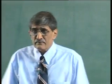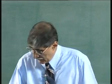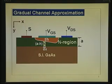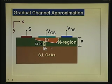We have been discussing the drain saturation current using the Shockley model, where the assumption is that the drain current saturates when pinch-off occurs at the drain. The total potential drop there is Vp0, so when VdSat is present, VdSat plus Vbi minus Vgs is equal to Vp0 — that is the condition.